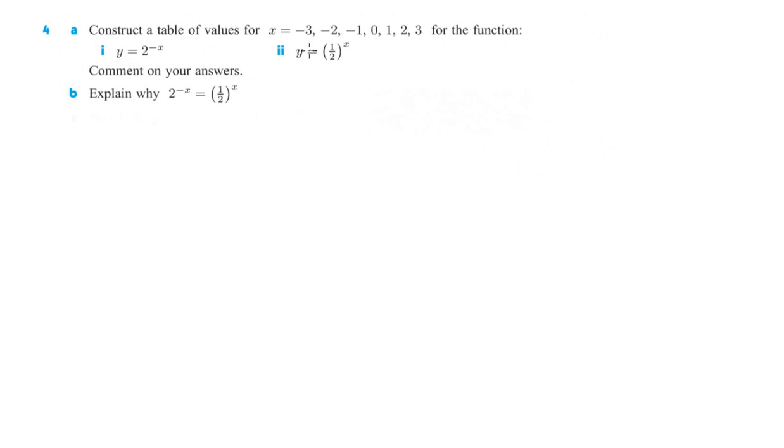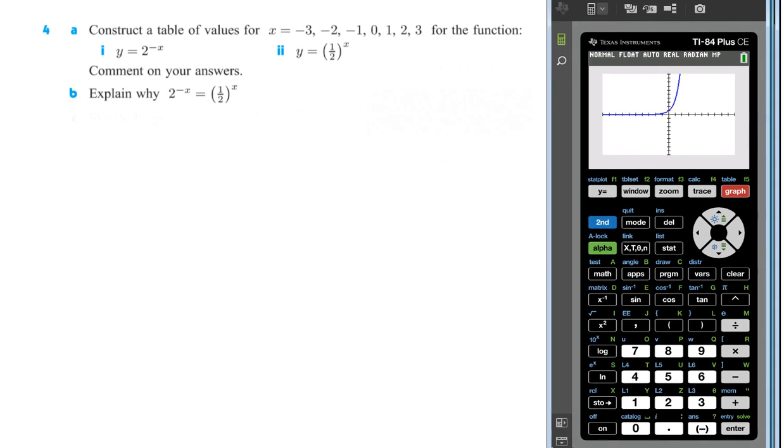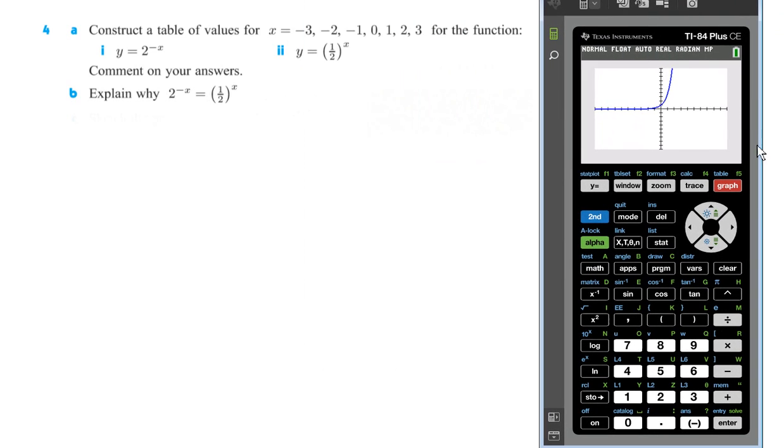Number four, construct a table of values for x equals negative 3, 2, 1, all the way up to 3 for the function y equals 2 to the x, and y equals one half to the x. Comment on your answers, and then explain why 2 to the negative x equals one half to the x power. So let's make our life easy and find those in here. We're going to change that 4 to the x into 2 to the negative x.